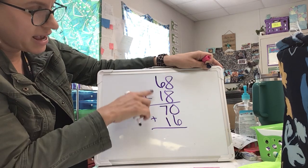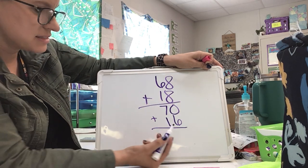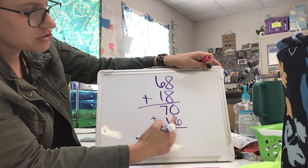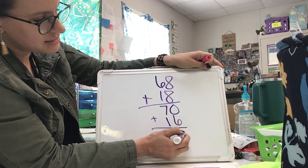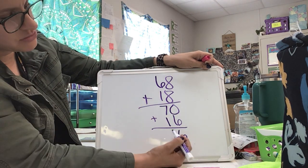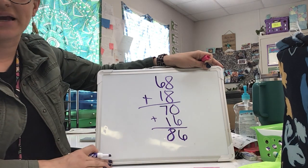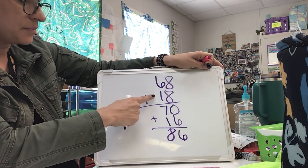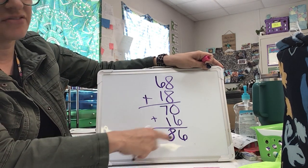After I add my tens, I'm adding my ones place. 70 plus 16 — those are our partial sums. Zero plus six is six, and seven tens plus one ten is eight in my tens place. 68 plus 18 has a sum of 86.